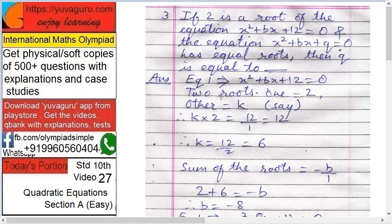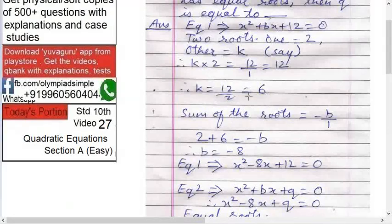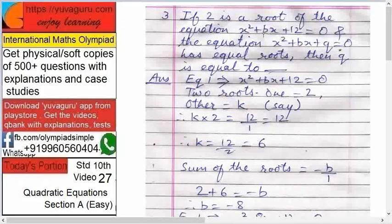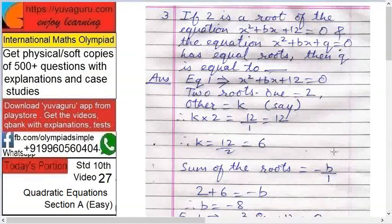Come to the same as we have found the product of the roots. There will be sum of the roots. Sum of the roots is minus b upon a. For the first equation, so minus b upon 1. But sum of the roots is 2 plus 6, because 2 and 6 are the roots, therefore 2 plus 6 equals to minus b upon 1.